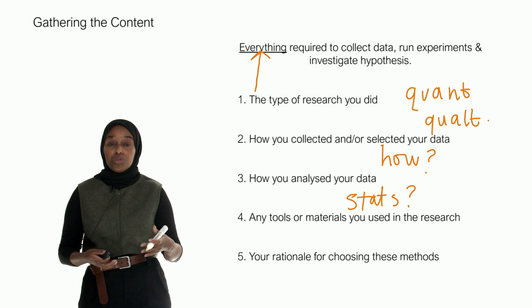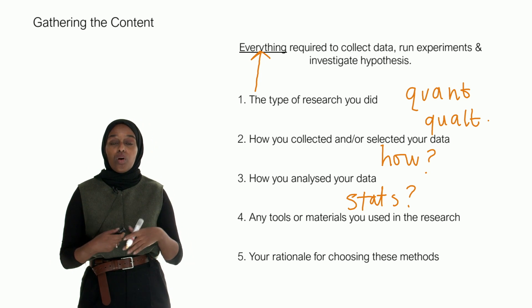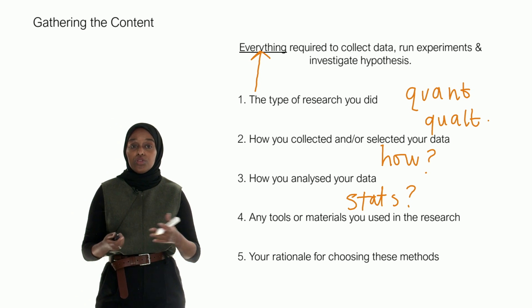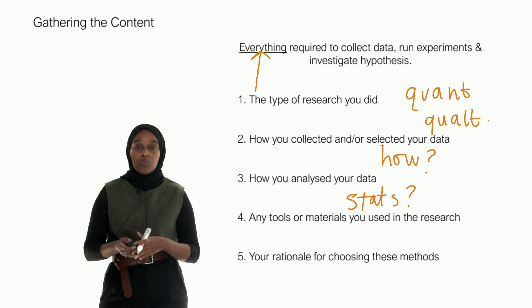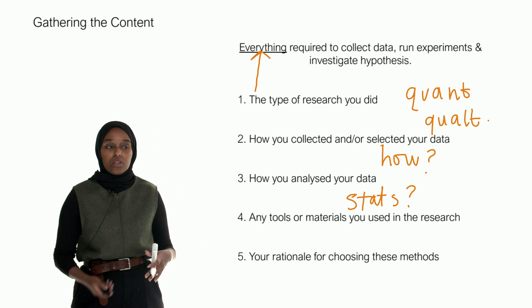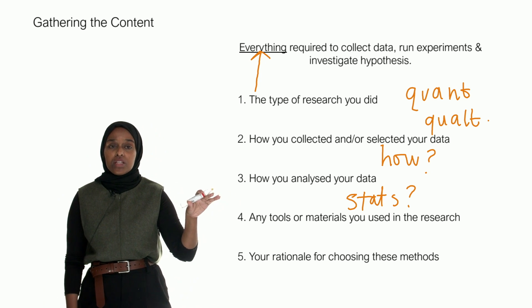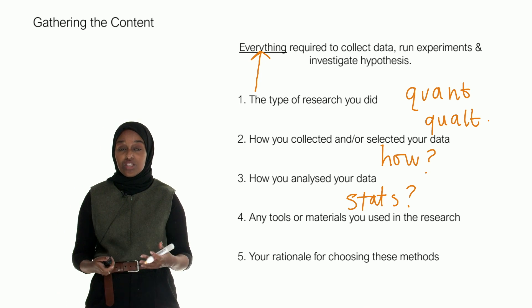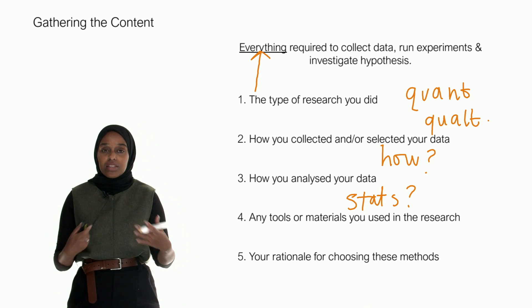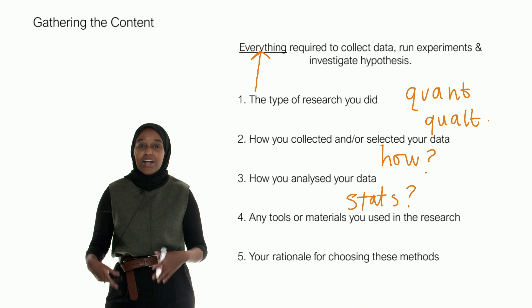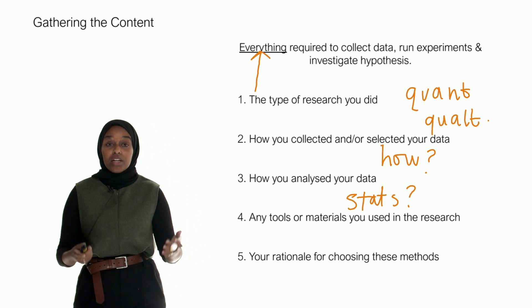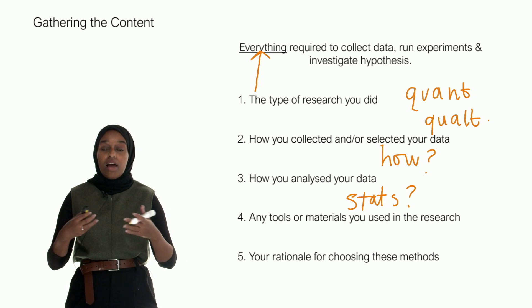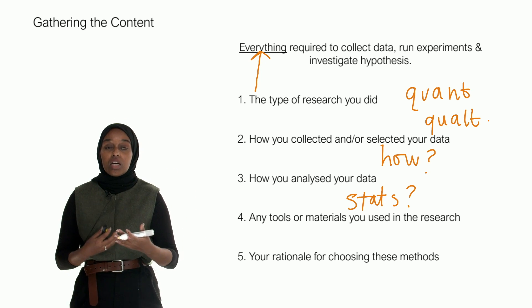The type of stats that you use can heavily determine whether your findings are significant or not. You need to be able to justify why you use those particular stats and what your reasons were behind using them. What you can do if you're struggling with stats is to visit your university. Every university has a statistician—people who are trained to identify patterns within data and are experts in knowing what kind of analysis you do for different data types.